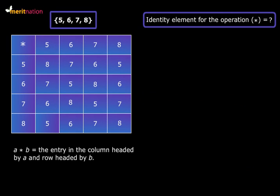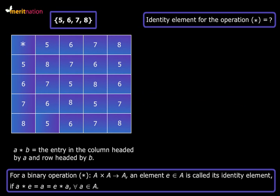Let's find out the answer to this question. Now we know that for a binary operation star that is defined from A cross A to A, an element e that belongs to set A, if it exists, is called its identity element if a star e equals a equals e star a for all a that belong to set A.